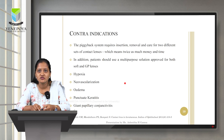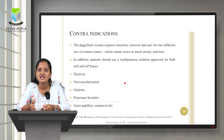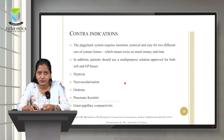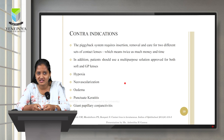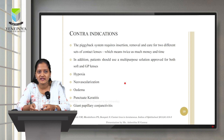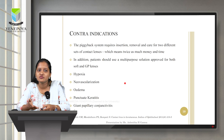In addition, the patient should use a multipurpose solution approved for both soft and GP lenses. A common scenario occurs when patients purchase contact lens solution from untrained optical outlets and end up using the wrong solution for both lens types. Another contraindication is the risk of hypoxia — with a barrier on the cornea leading to reduced oxygen delivery, which can result in neovascularization where the cornea develops new blood vessels, further causing corneal scarring and edema.